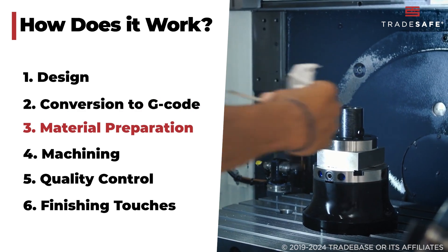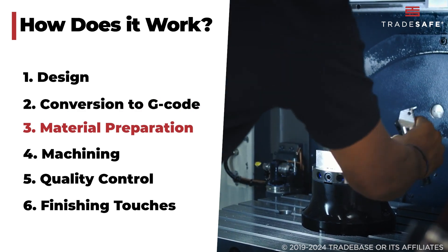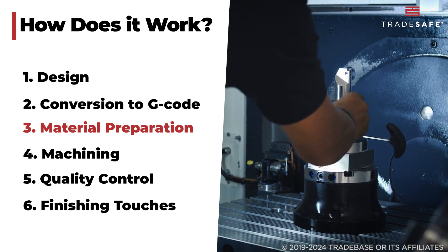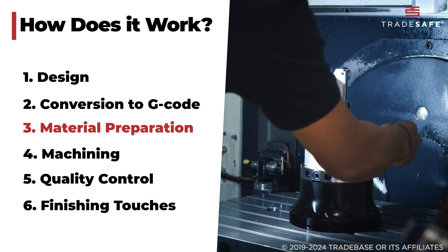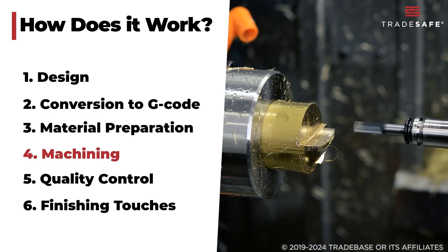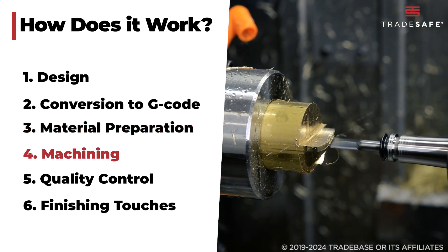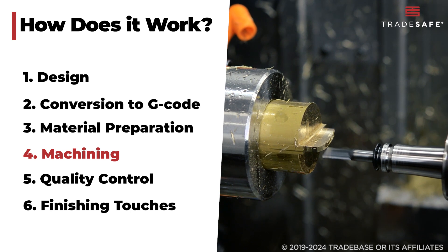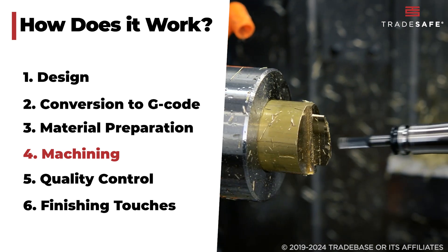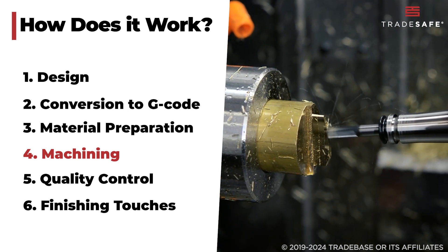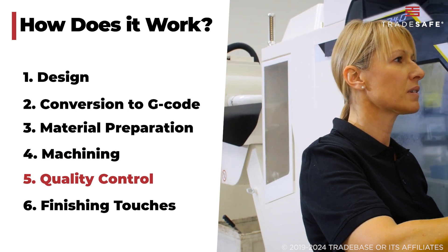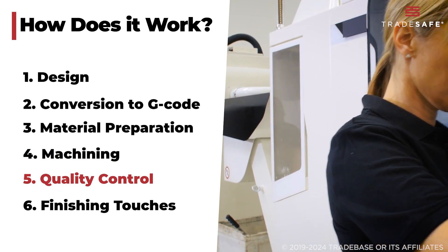The raw material, such as metal or plastic, is then securely placed in the CNC machine, ready for processing. Following the G-code instructions, the CNC machine begins cutting, drilling, and shaping the material to match the design specifications.